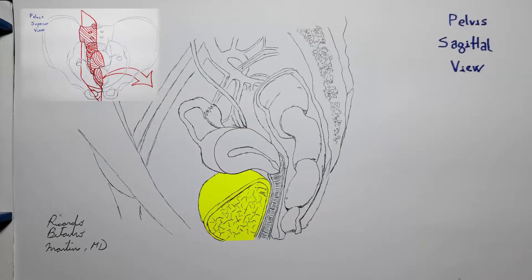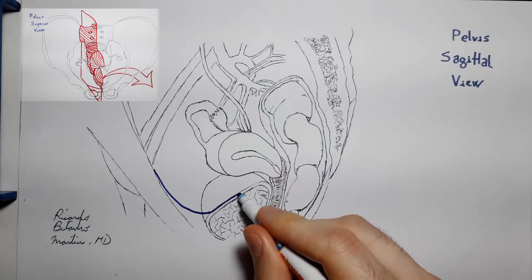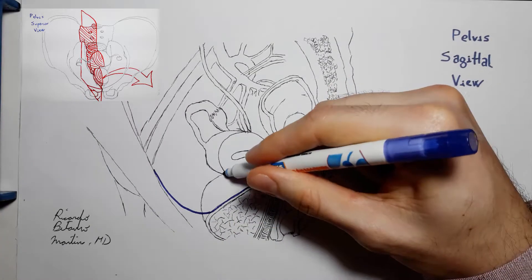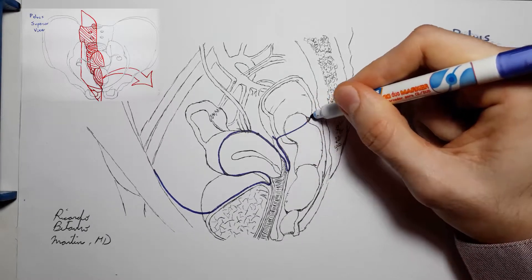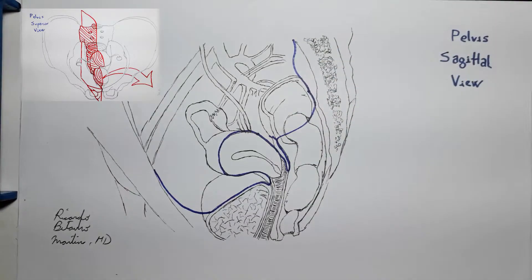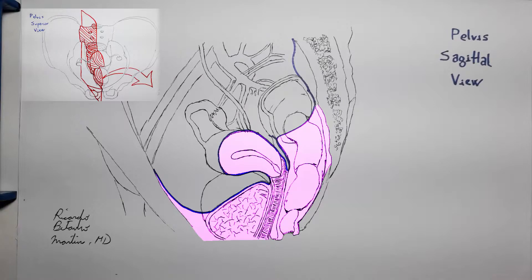The uterus, the bladder, and the lower two-thirds of the rectum are below the peritoneal membrane, and therefore can be classified as infraperitoneal or subperitoneal. They are below the peritoneum, and therefore in the true pelvis. That's why we call them pelvic organs and not really abdominal organs.